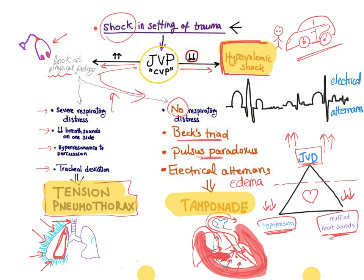On inspiration, there is a decrease in systolic blood pressure of more than 10 mmHg — less than 10 is normal. On EKG, you see electrical alternans: alternating high voltage and low voltage beats, because the heart is swinging inside a pool of blood within the pericardial cavity.